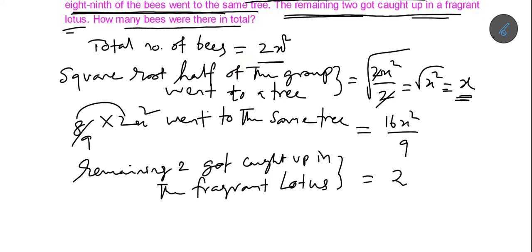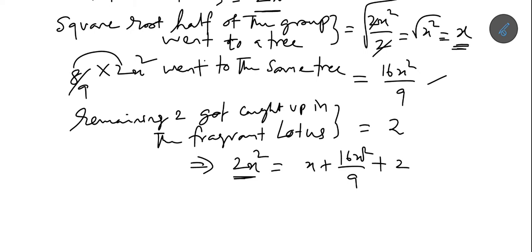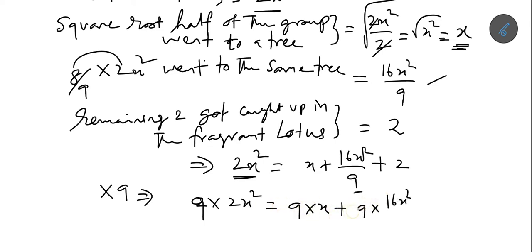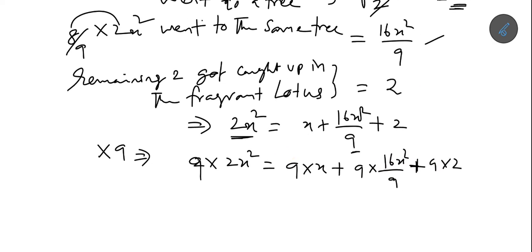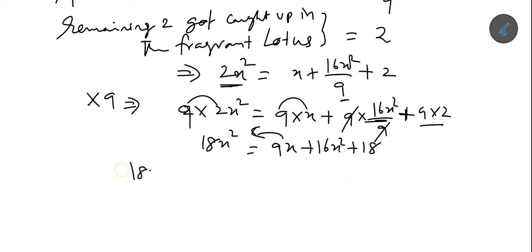The total number is x plus 16x²/9 plus 2, and this equals 2x². Multiplying the entire equation by 9, we get: 18x² on the left-hand side. Then minus 16x², minus 9x, minus 18, all equal to zero.